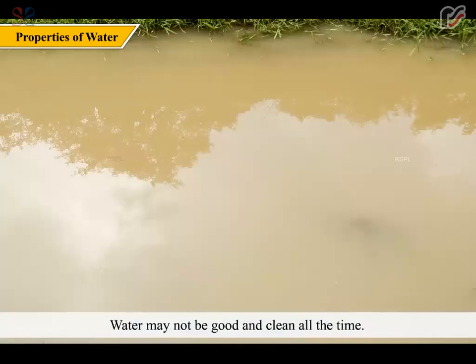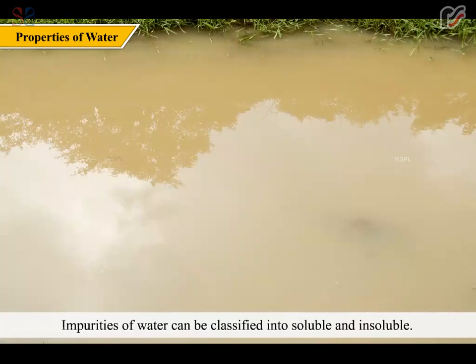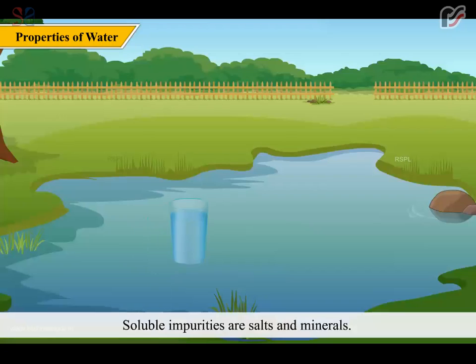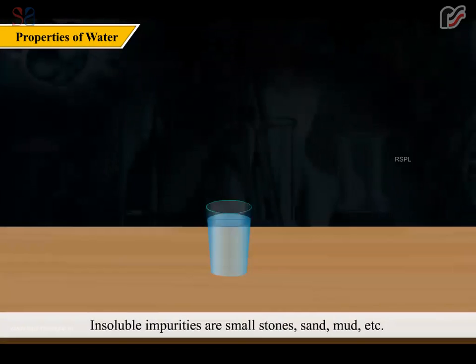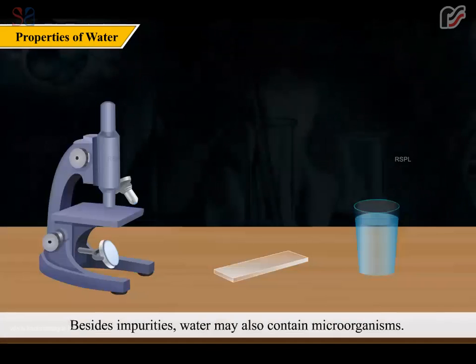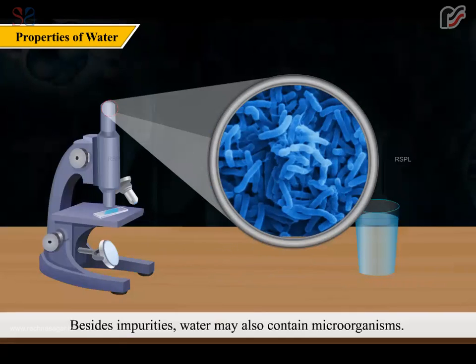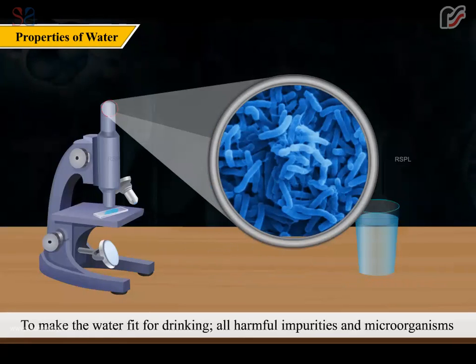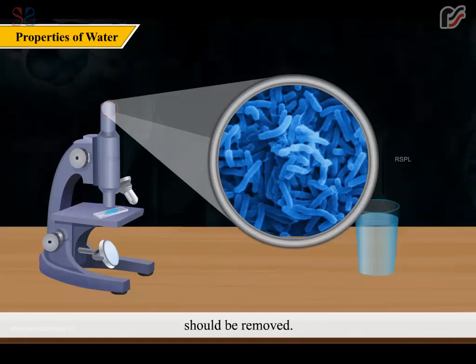Water may not be good and clean all the time. It may have some impurities in it. Impurities of water can be classified into soluble and insoluble. Soluble impurities are salts and minerals. Insoluble impurities are small stones, sand, mud, etc. Besides impurities, water may also contain microorganisms. To make the water fit for drinking, all harmful impurities and microorganisms should be removed.